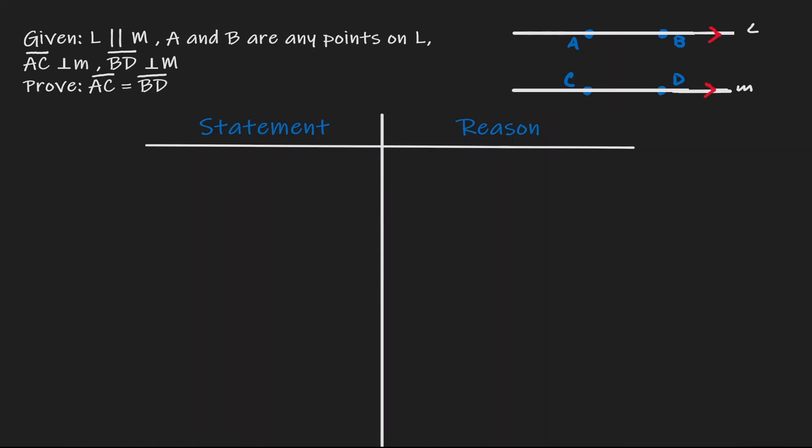In addition to that, we have certain points. We know that point A and point B are on line L. We also have that AC is perpendicular to M, and BD is also perpendicular to line M. What we want to show is that the length of AC is equal to the length of BD — in other words, that the distance between those two parallel lines is congruent.